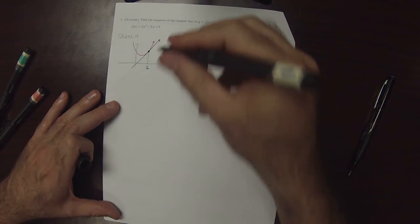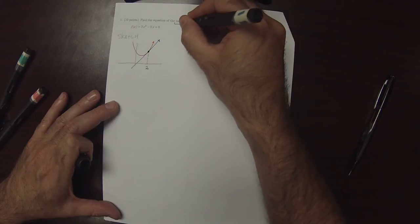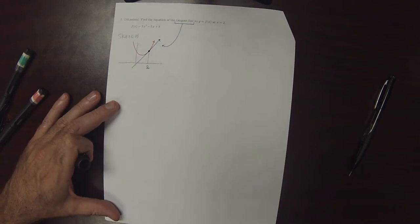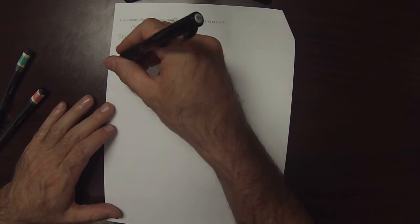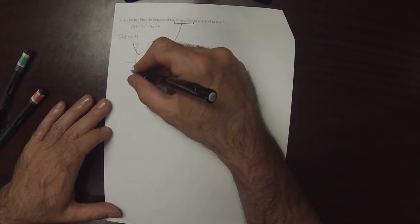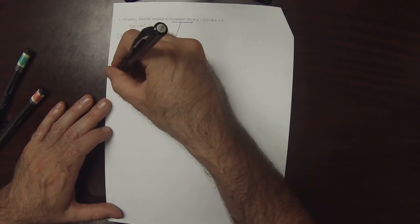And then at x is 2, there's a point with a tangent going through it. So, we want to find the equation of this tangent line. So, fundamentally, we need to find a point, this point, and also the slope.